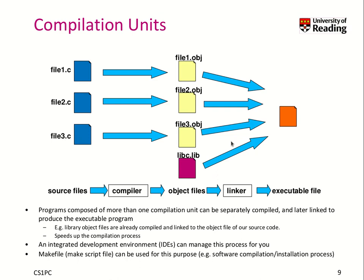When you have many large C files, the compilation process can take quite a while, which is frustrating for developers. Build tools like makefiles help by updating only those objects that have changed. So if you change file1.c, you only need to recompile file1.object and then link it together with the other object files and libraries — you don't have to reprocess the unchanged source files.